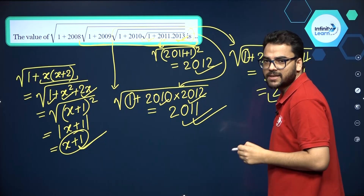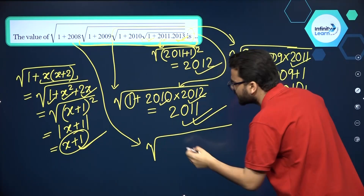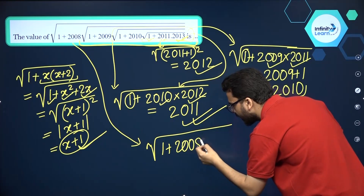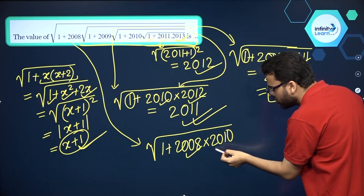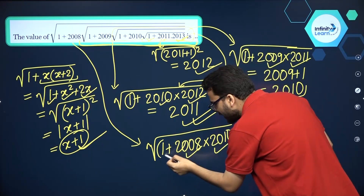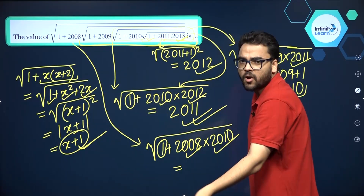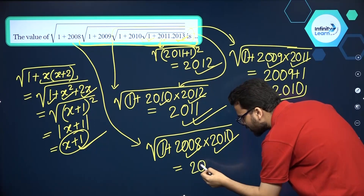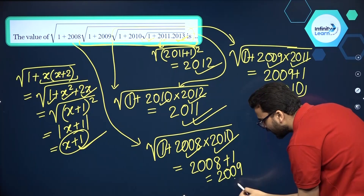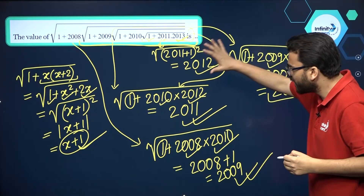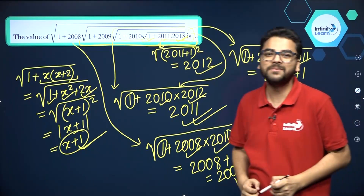So what are we left with after this? We are left with square root of 1 plus 2008 into 2010. Again it is of the form X into X plus 2, and plus 1 is there inside the square root. Using this formula — this trick, whatever you may call it — it gives you X plus 1 only. So it will be 2008 plus 1, and the answer is 2009. Therefore, I am writing this much, but if you know this trick, you can do this in your mind as well. I hope this is clear to you.